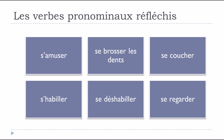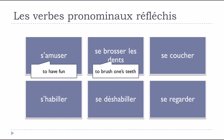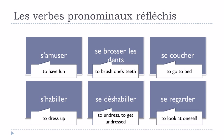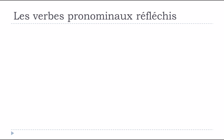Here is another series with translations: s'amuser, se brosser les dents, se coucher, s'habiller, se déshabiller, se regarder. Now that you have an idea of what these verbes pronominaux réfléchis are, let's see how to conjugate them, starting with the present form.